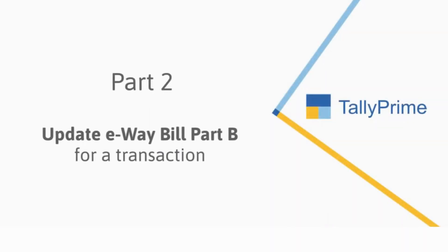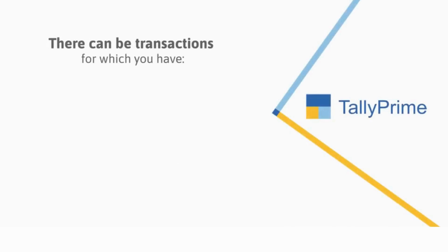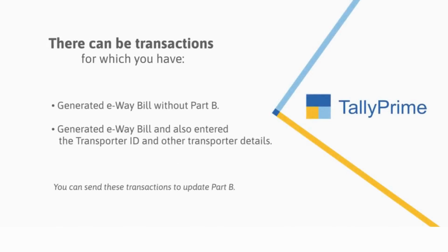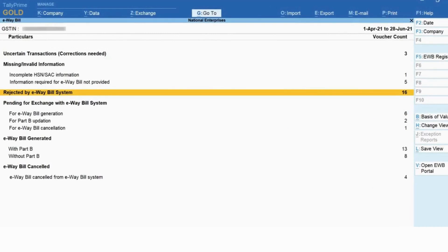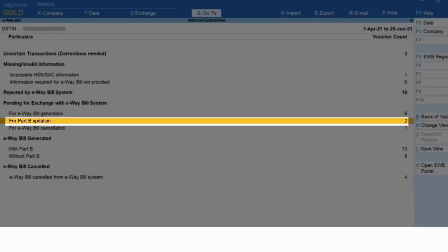Now let's see how to update e-way bill Part B for a transaction. There can be some transactions for which you have generated an e-way bill without Part B. This happens when you do not have the transporter details such as transporter ID, vehicle number, and other mandatory information for e-way bill generation with Part B. There can also be transactions for which the e-way bill was generated, after which you entered the transporter ID and other transporter details, but you are yet to update Part B. Such transactions will be in 'For Part B Updation' under 'Pending for Exchange with the E-way Bill System'.